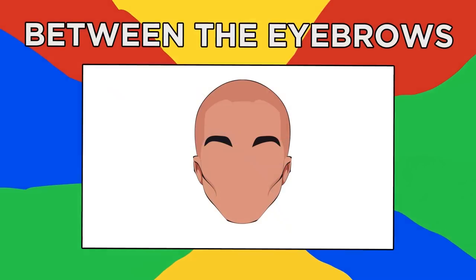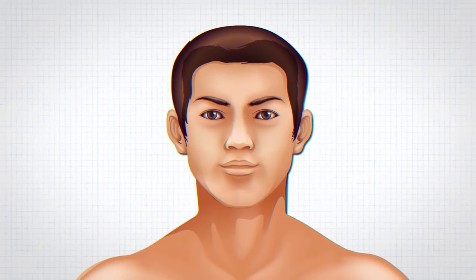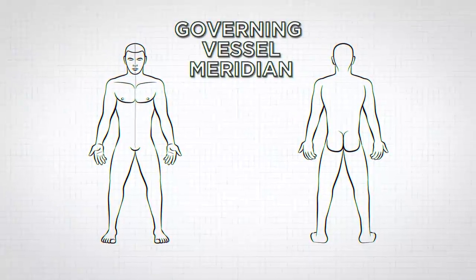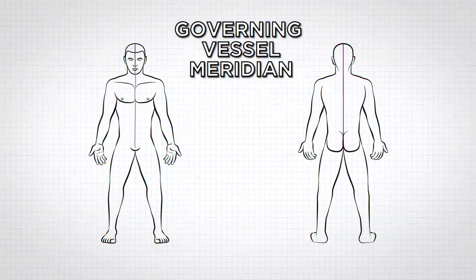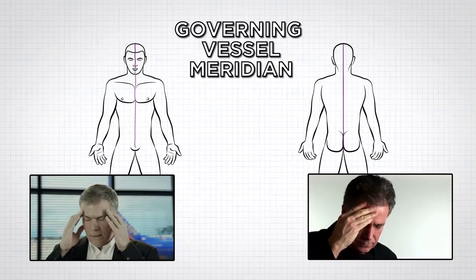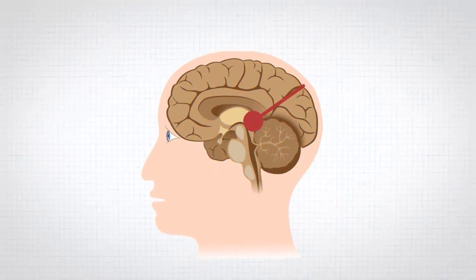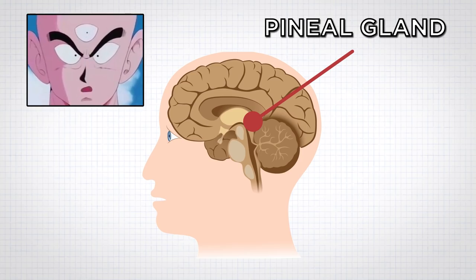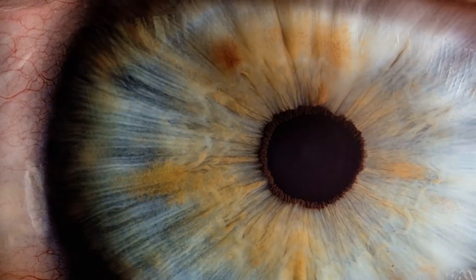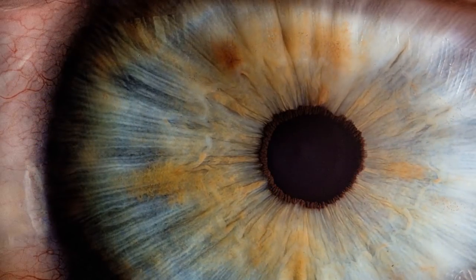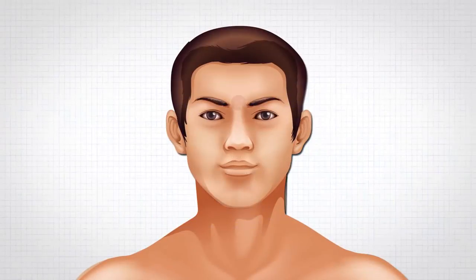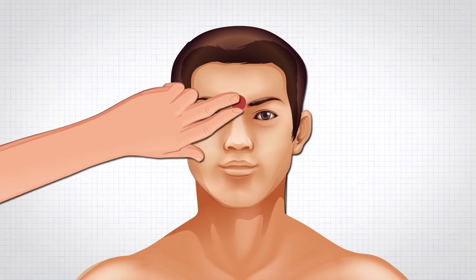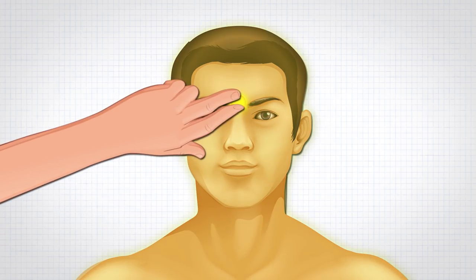Number two, between the eyebrows. Where the bridge of the nose meets the middle of the eyebrows lies a point along the governing vessel meridian known to alleviate symptoms related to headaches caused by eye strain or sinus pressure. Often referred to as the pineal gland, this point was thought to be the beginning of a third eye. The effectiveness of our real eyes negated the need for a third, so it supposedly became an area for hormone secretion. Lightly hold this area with the index and middle fingers for a few minutes to balance the energy of the body.